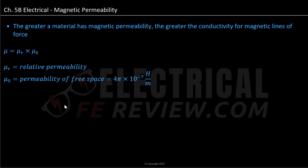Hello, and welcome to today's video on electrical materials, where we will be covering magnetic permeability. The greater a material's magnetic permeability, the greater the conductivity for magnetic lines of force. Magnetic permeability is equal to the relative permeability times the permeability of free space, where the permeability of free space is denoted as 4π × 10⁻⁷ Henrys per meter.